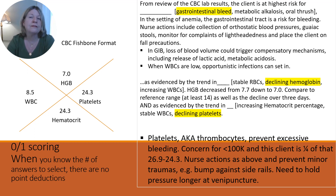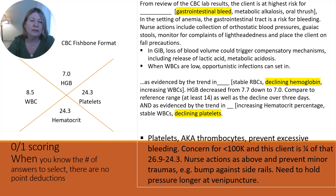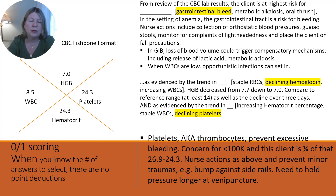When we go back to the thoughts of scoring for a test question, any time you know the number of answers to put in, it's zero-one scoring — so when you know the number of answers to select, there are no point deductions. Gastrointestinal bleed would have given you one point, declining hemoglobin and declining platelets would have given you three points total. If you got any wrong, you just wouldn't have gotten the point, but you would never have a point taken away.